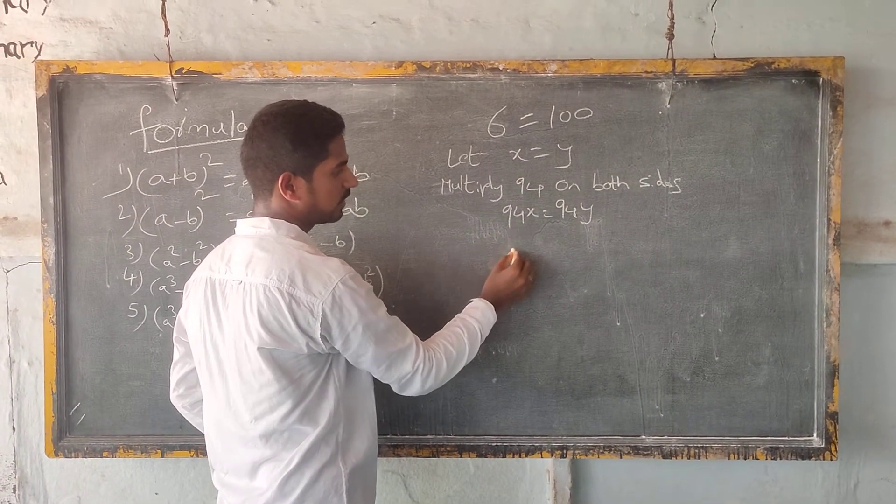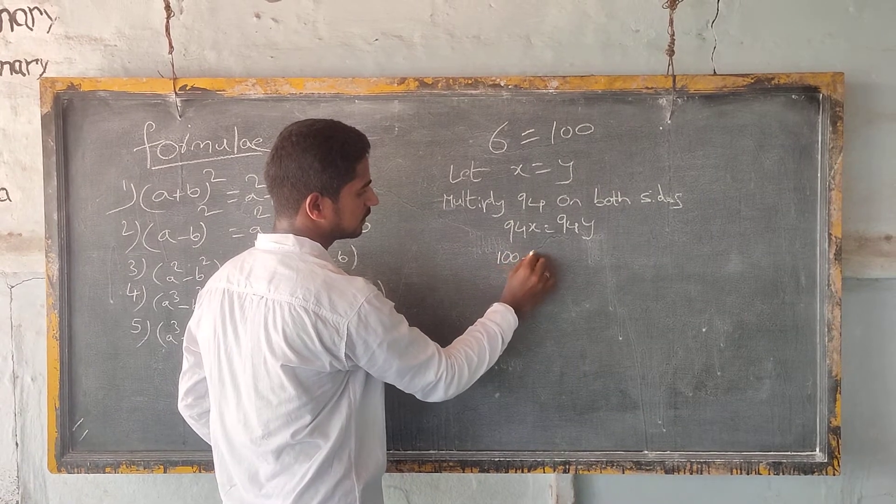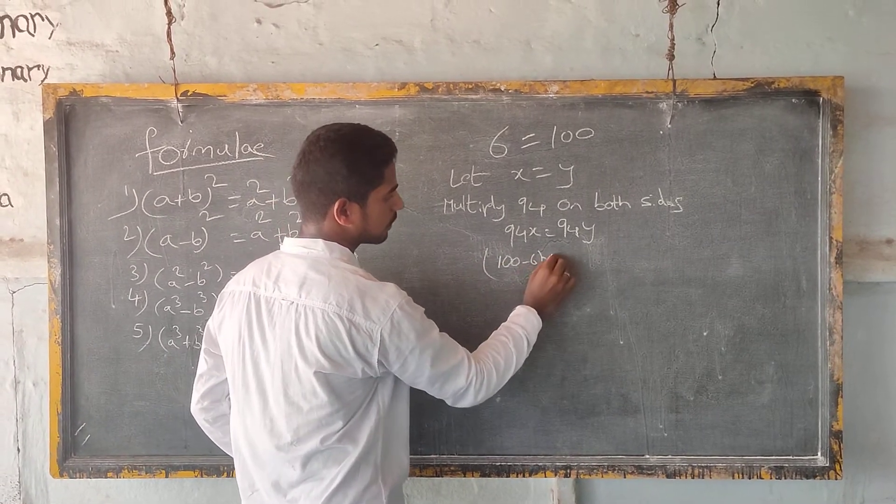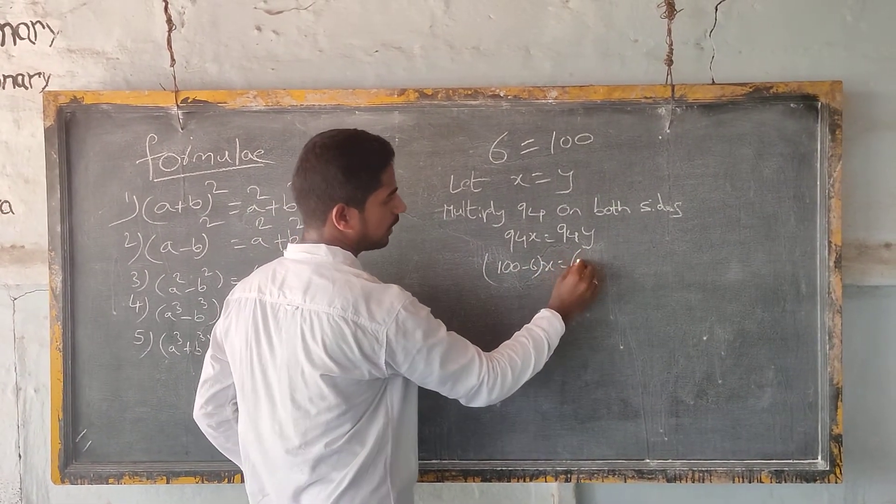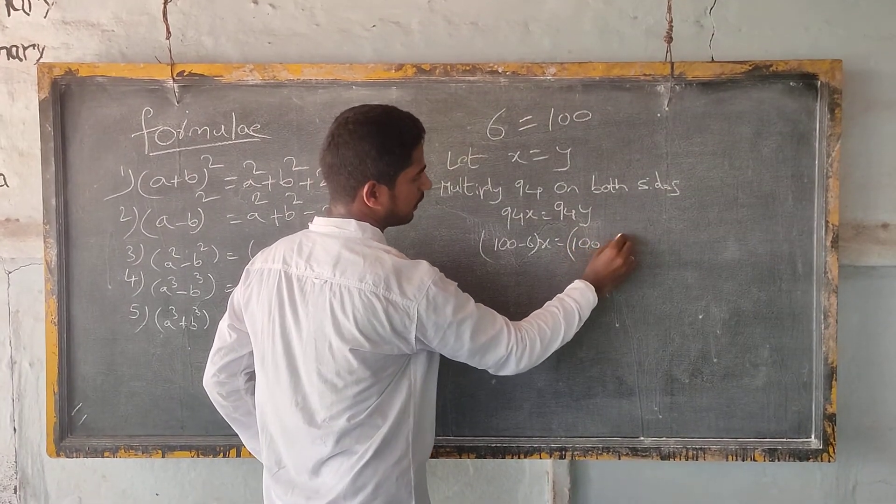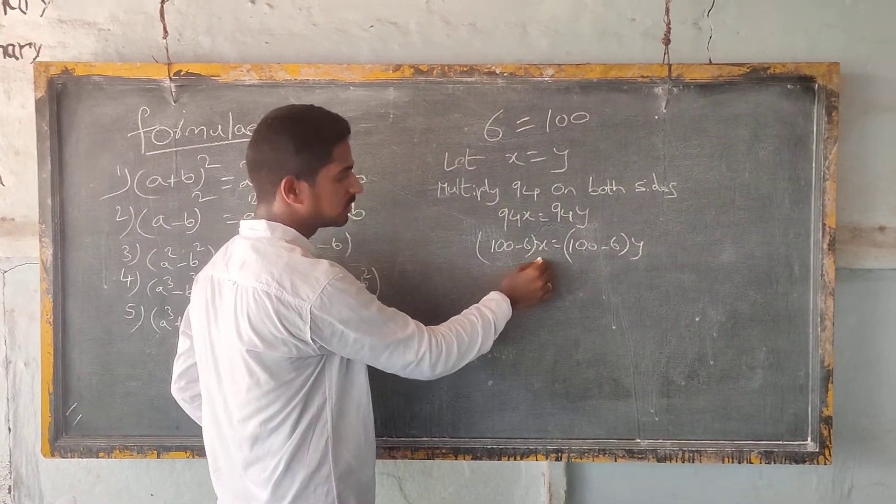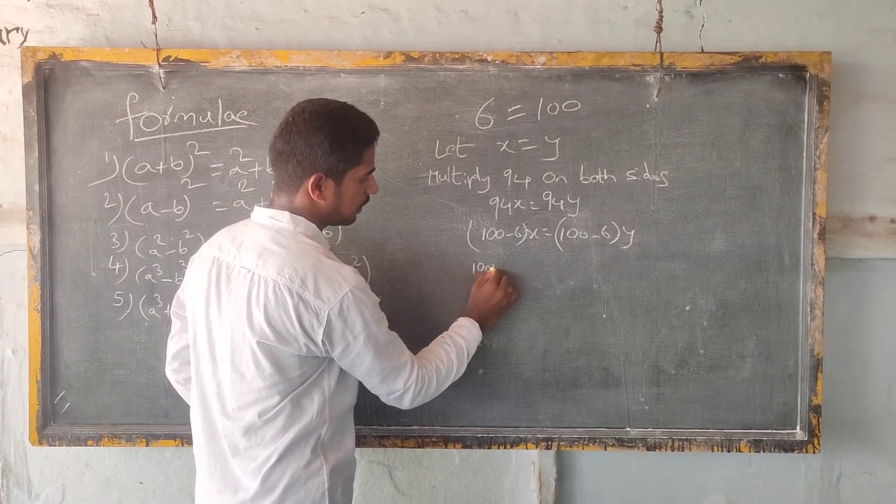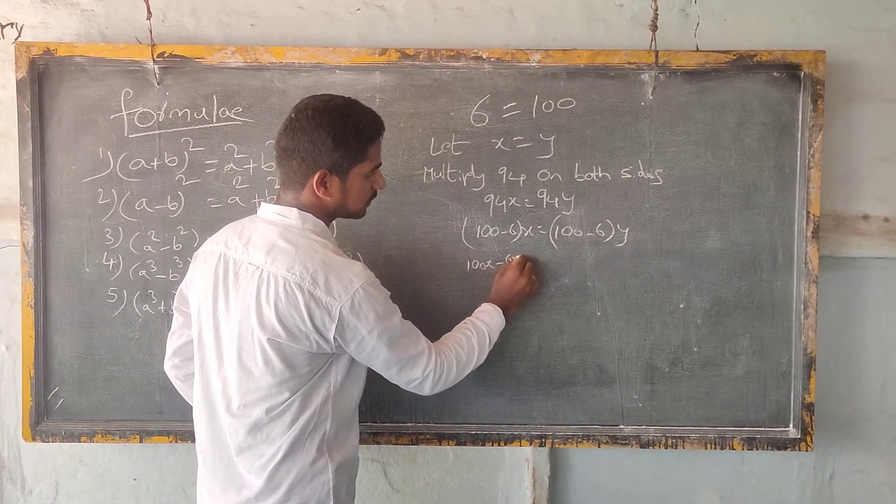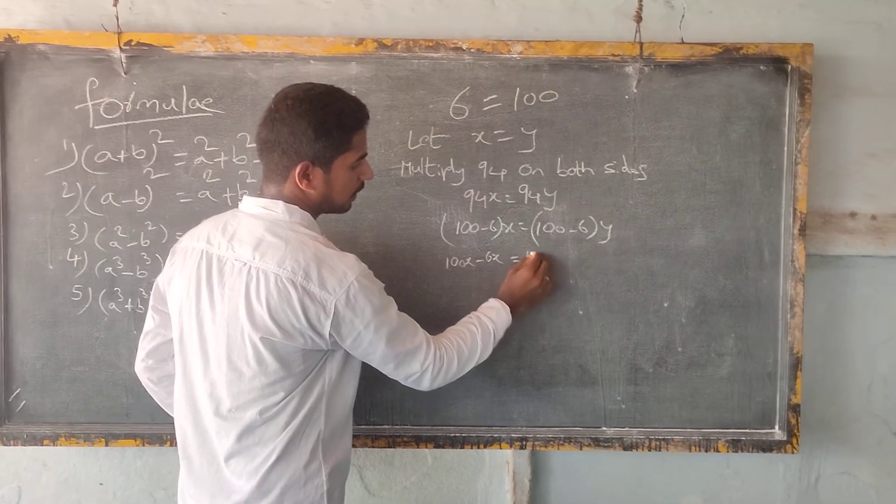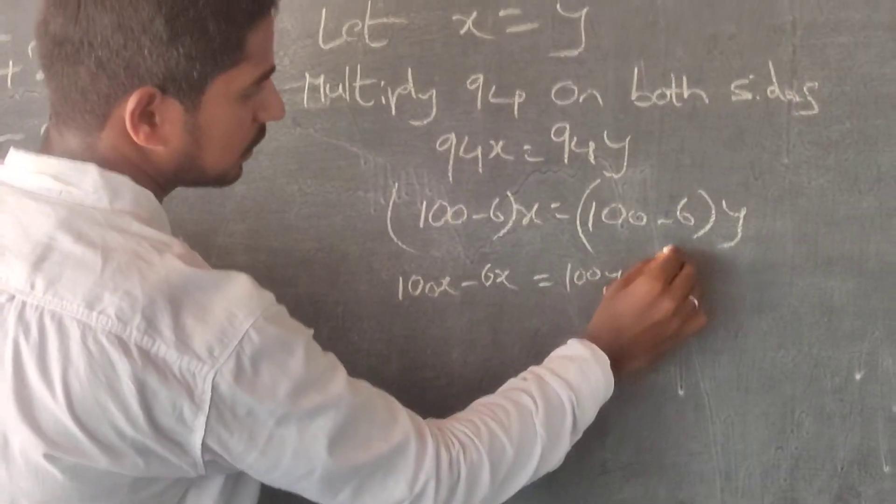We will write ninety-four as hundred minus six. And also, ninety-four as hundred minus six into y. Multiplying x into both terms. Hundred x minus six x. Hundred y minus six y.